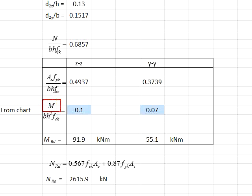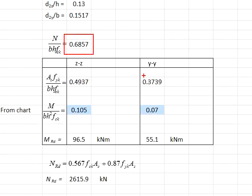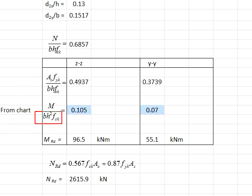Determine the position on the x-axis where these two values intersect, then draw a horizontal line at around 0.69 — with the curve of around 0.5 — and the intersection will be at 0.105. Next, look into the yy-axis: draw a horizontal line at a point of 0.69 and intersect with the point of 0.38. Somewhere there the intersection will fall around 0.07, with the normalised value of M/bh²fck.